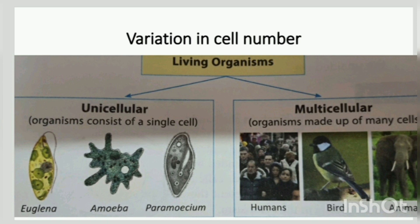With respect to cell number, living organisms can be classified as unicellular or multicellular organisms. Unicellular — as the word suggests, 'uni' means single — so all organisms consisting of only a single cell are called unicellular. Examples include Euglena, Amoeba, and Paramecium. Multicellular organisms are made up of many cells, more than one, like birds, animals, and humans.